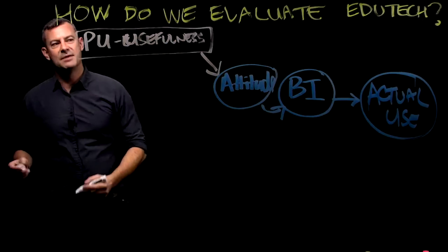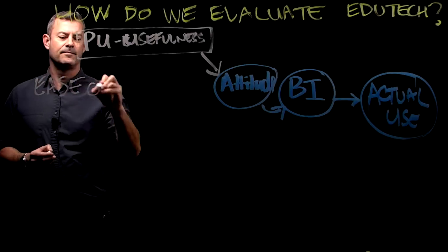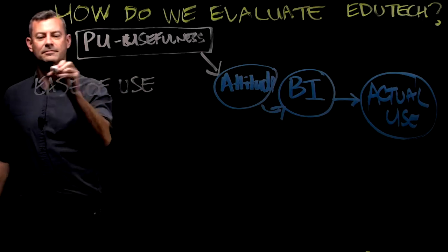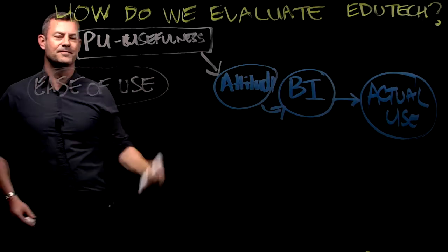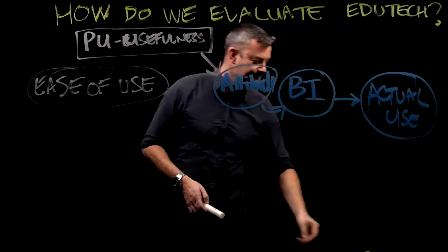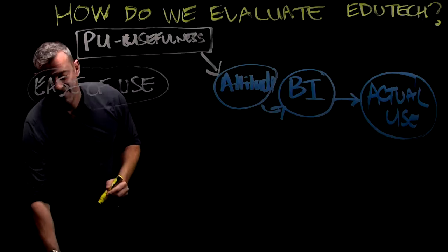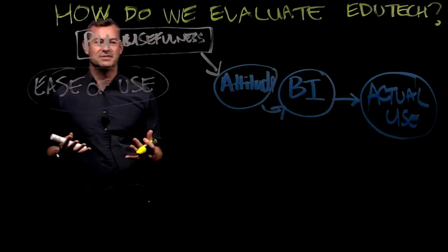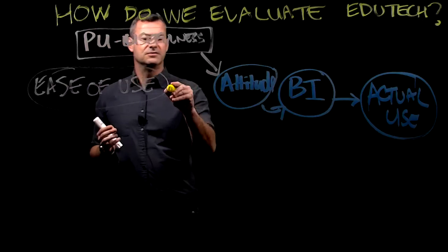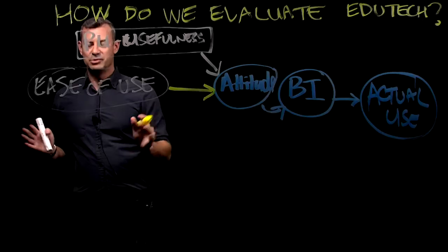Number two is ease of use. Is the technology easy to use? If it is, then that barrier is conquered. But if it's not easy to use, if the interface is complicated, who's going to want to have a positive attitude towards it? No one. So that's really important.